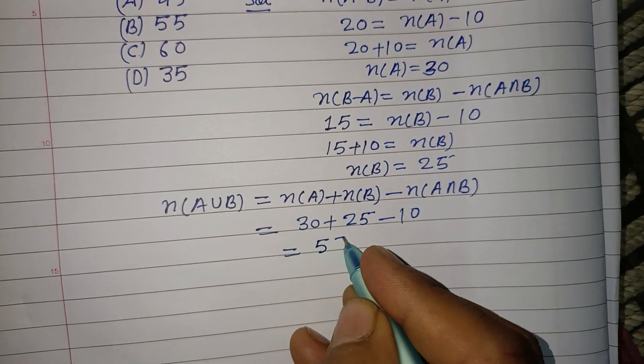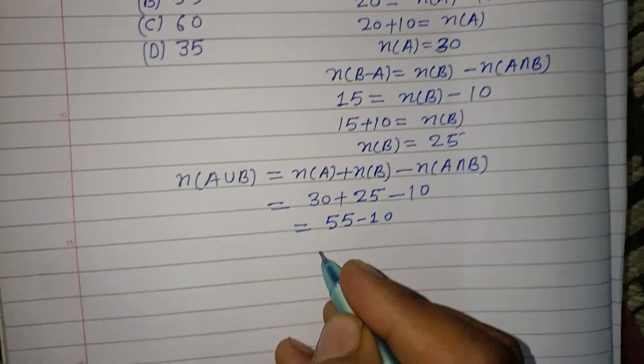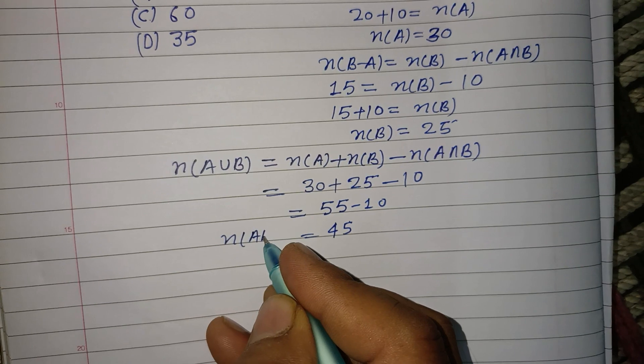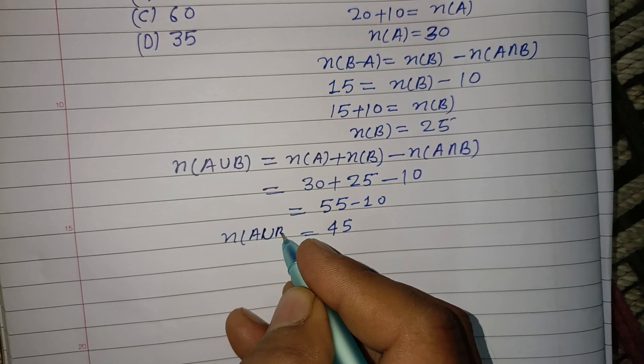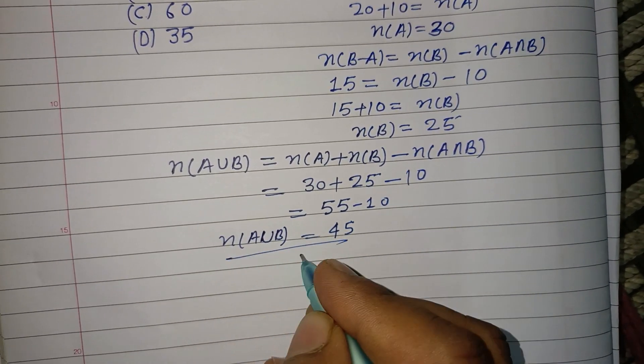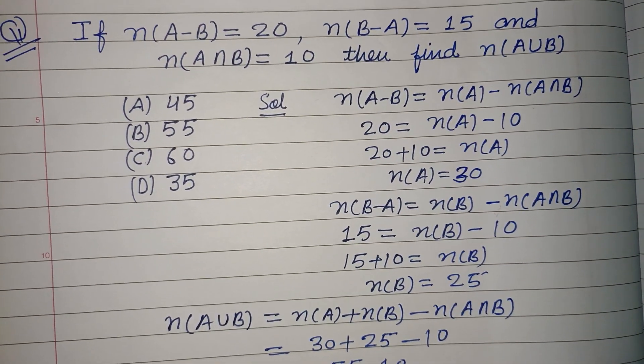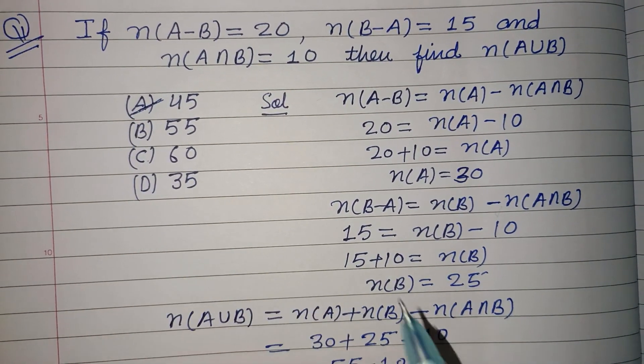30 plus 25 is 55, and 55 minus 10 is 45. So n(A∪B) equals 45. This is our answer, which is given in option A, so option A is correct.